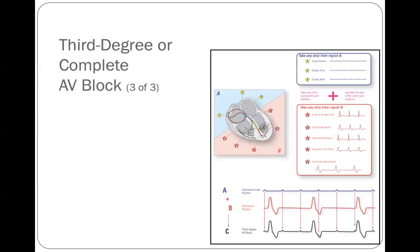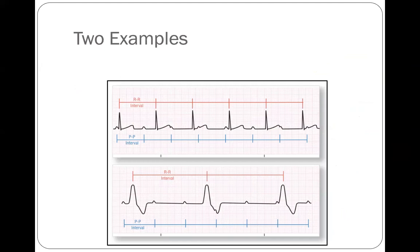The appearance on the EKG depends on where the ventricular pacemaker is located — QRS complexes can be narrow or wide, though they are commonly wide. You have an atrial rhythm, a ventricular rhythm, and what you see on the EKG is a compilation of both together. Two examples are shown: one with a third degree heart block and narrow QRS complex, and one with a complete heart block and wide QRS complex.